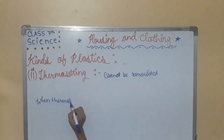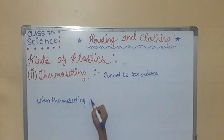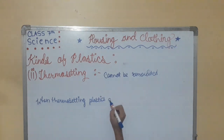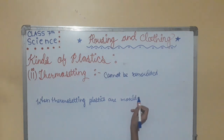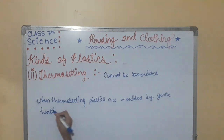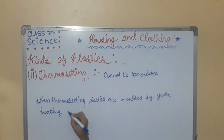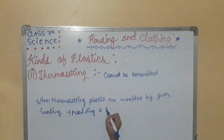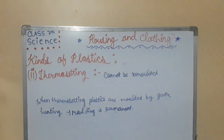When thermosetting plastics are molded by gentle heating, the molding is permanent. Examples of thermosetting plastics include urea-formaldehyde, melamine, etc.